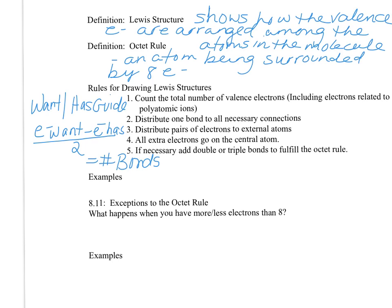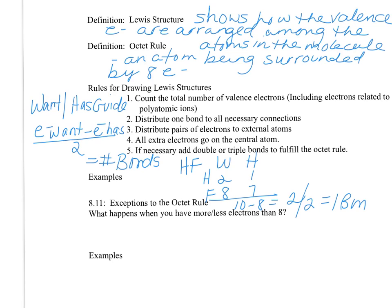Using HF as a simple example: H wants 2 and has 1; F wants 8 and has 7. So we have 10 minus 8 equals 2, divided by 2 equals 1 bond. That makes sense because you know it's H bonded to F with a single bond.